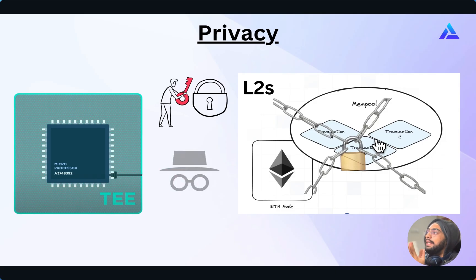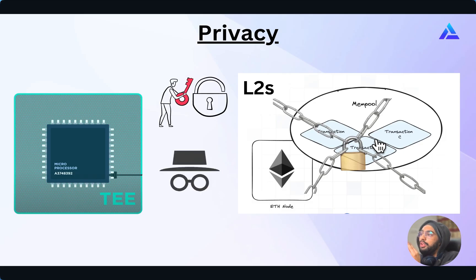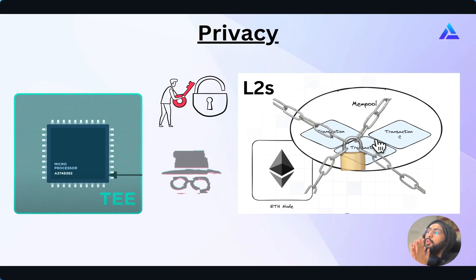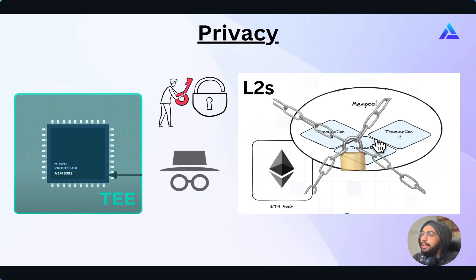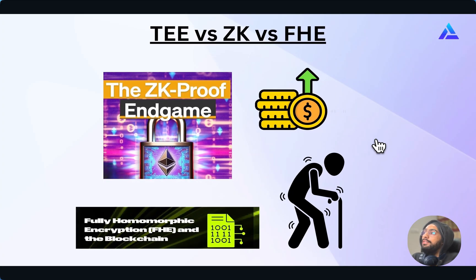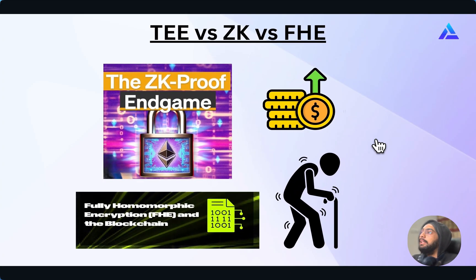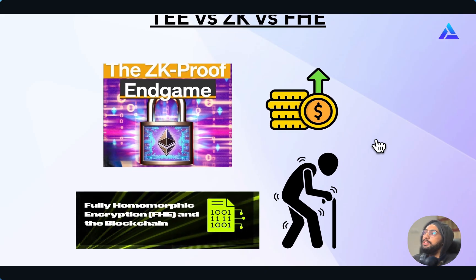This gives you the ability to decentralize things that previously relied on some form of social trust to maintain privacy — which really matters in the context of an L2, because users want private mempools where no one else can see their trades before they land on chain, so they can't get front-run. TEEs do all of this with a minimal amount of performance overhead. ZK proofs or FHE, for example, are pretty slow, but by using this specialized hardware, you can get close to zero performance overhead.